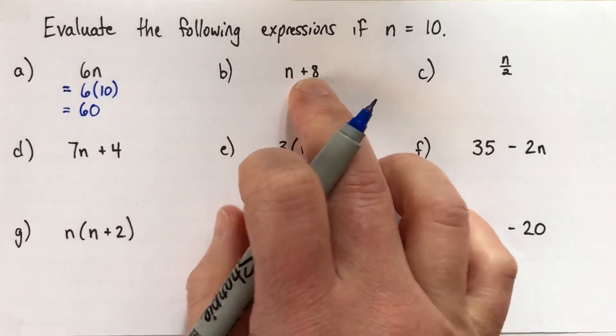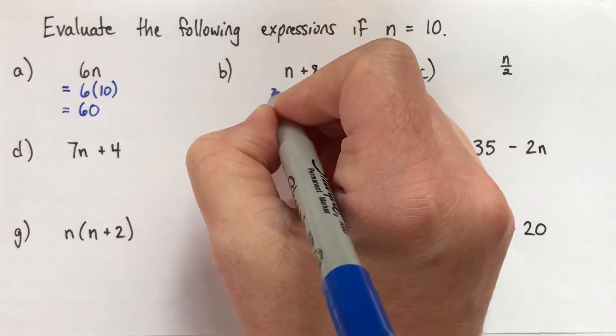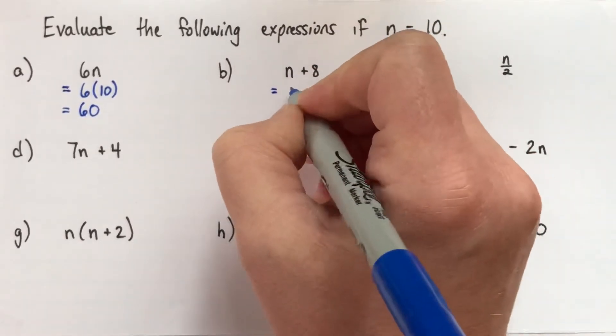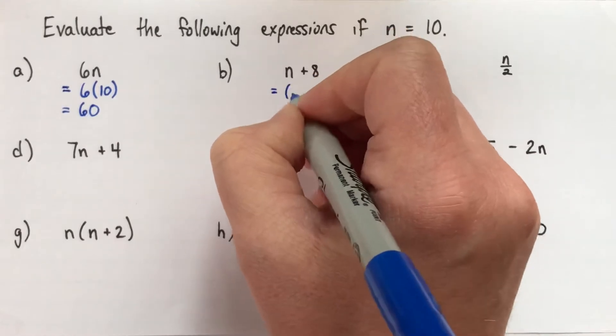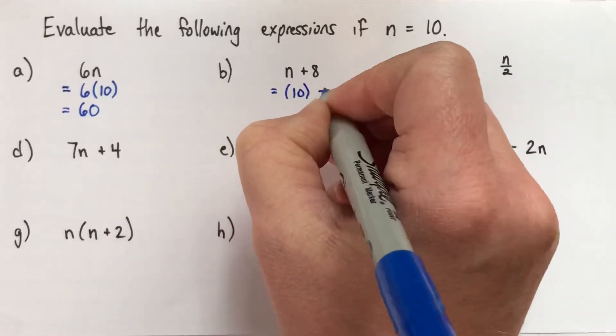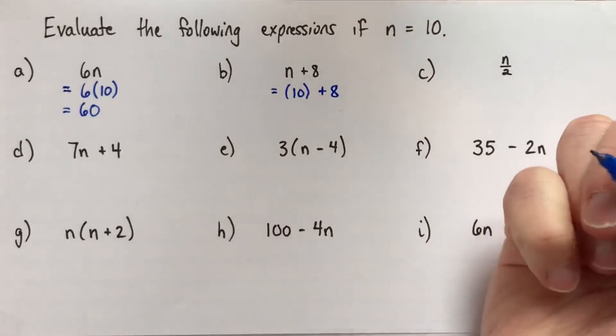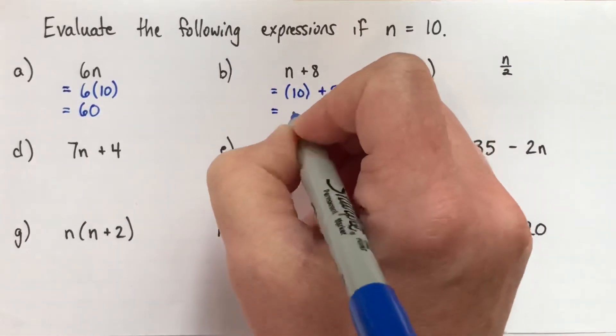Alright, next. n plus 8. So we'll do the same thing. I'll write equals. I'm going to replace my n with 10. In this case, the brackets don't matter. They certainly don't hurt. Feel free to put them in. 10 plus 8, and that is 18.